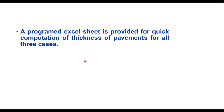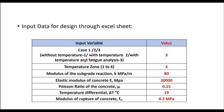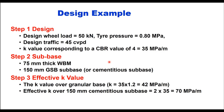An Excel sheet is provided for quick computation of pavement thicknesses for all three cases. The sheet requires input data such as: case number (1, 2, or 3) depending upon traffic, temperature zone depending upon area, modulus of subgrade reaction depending upon CBR of subgrade soil, elastic modulus of concrete (30,000 MPa), Poisson's ratio 0.15, temperature differential (depending on temperature zone), and modulus of rupture (4.2 MPa for M30 concrete).